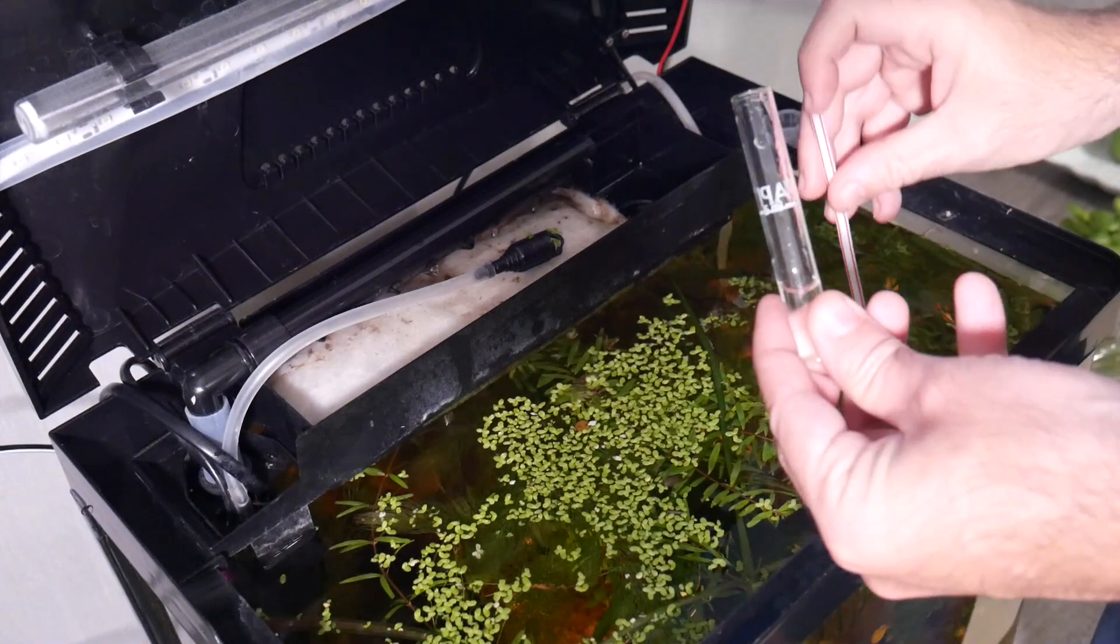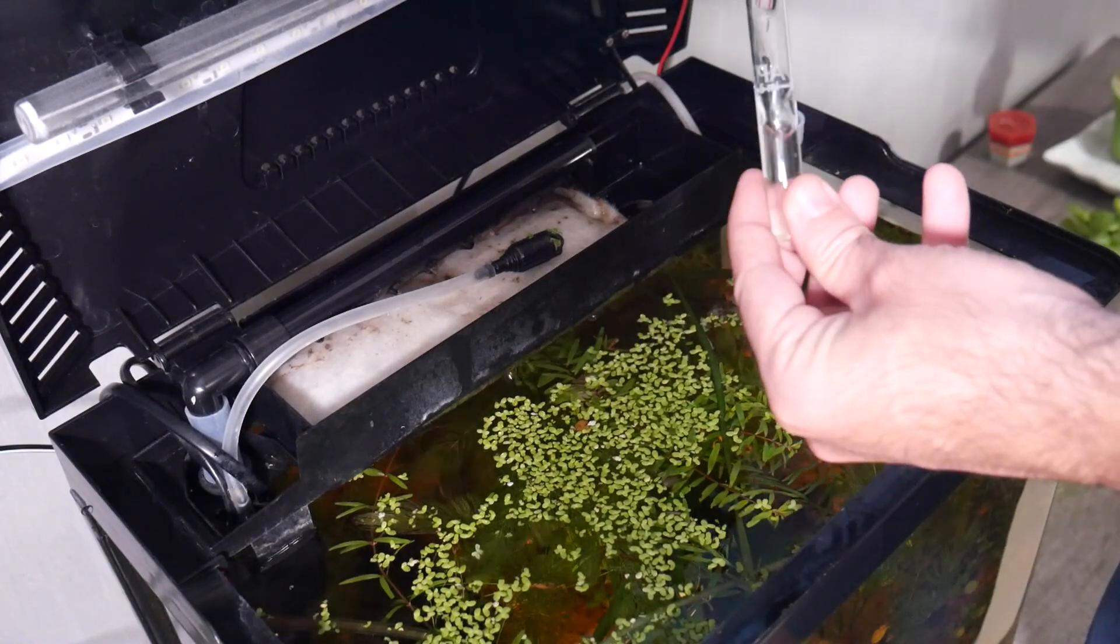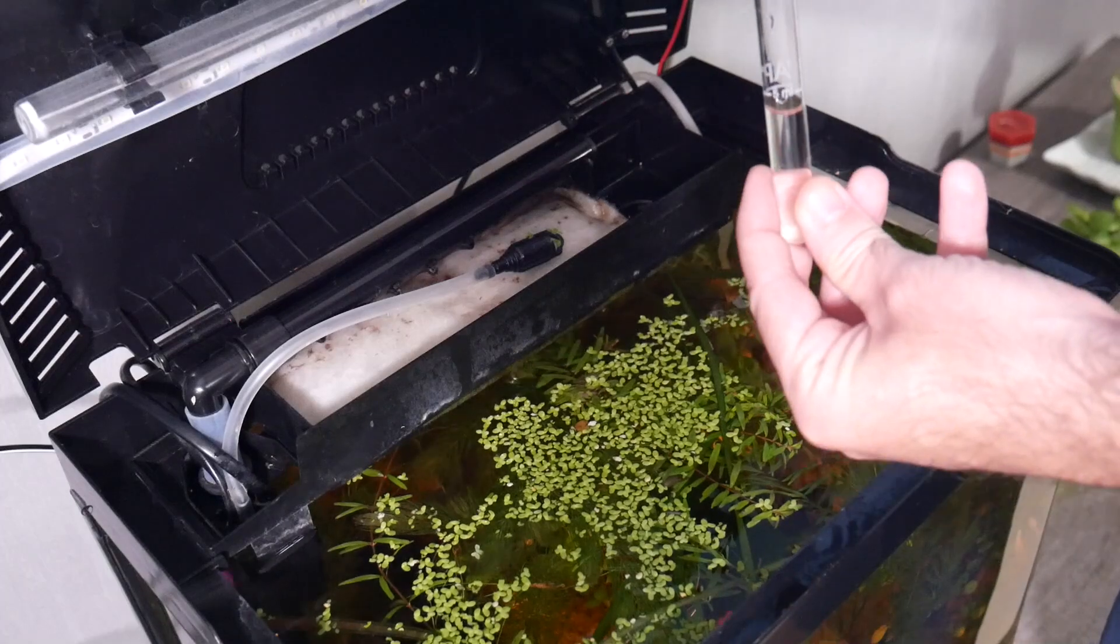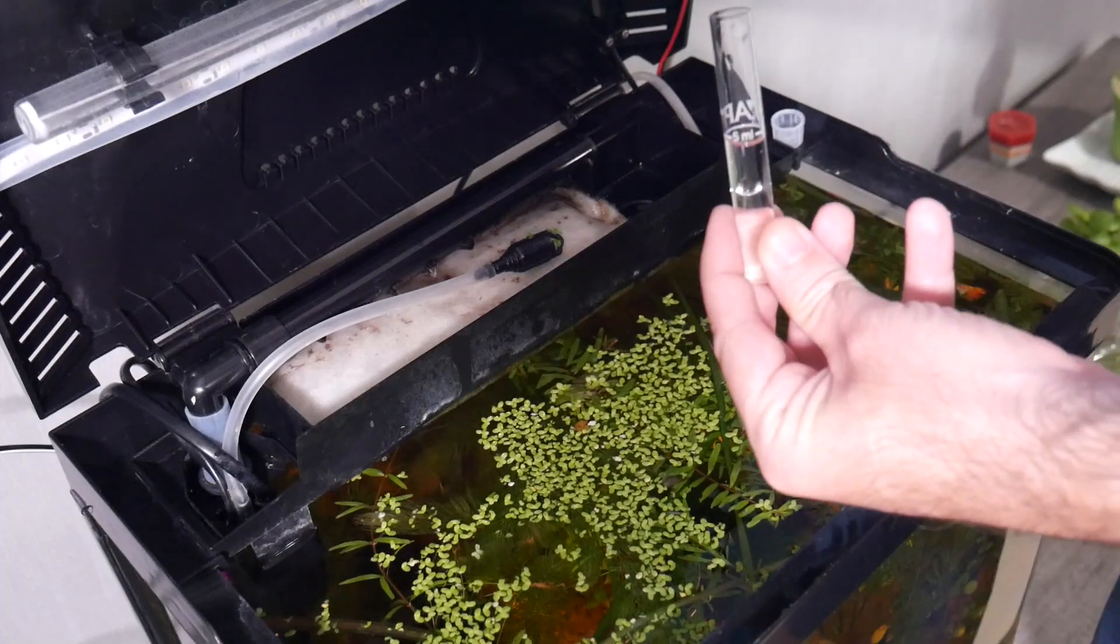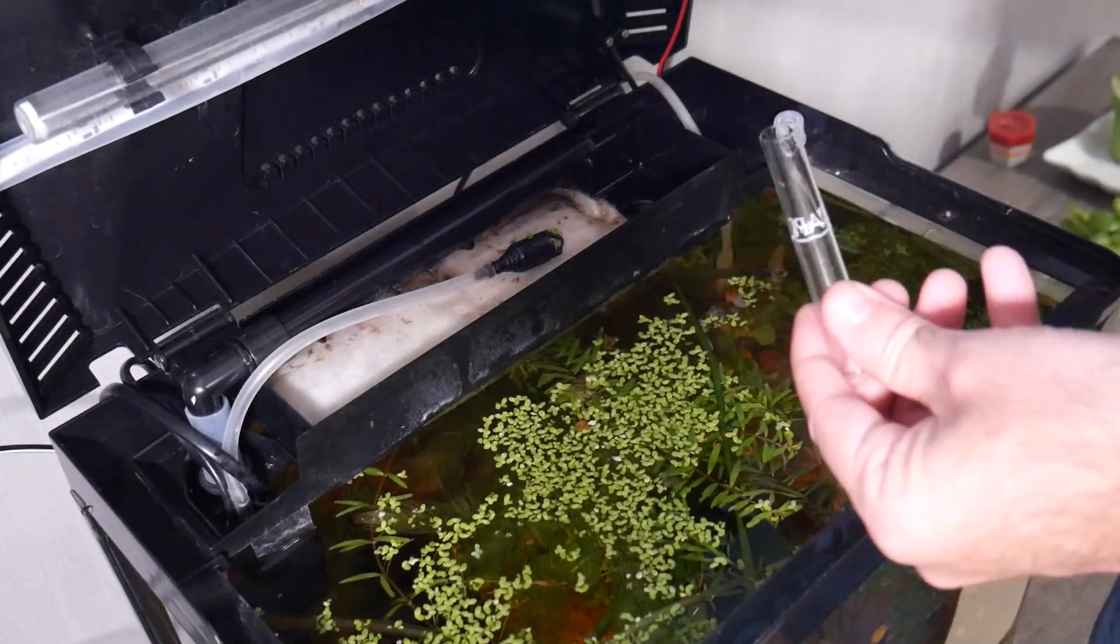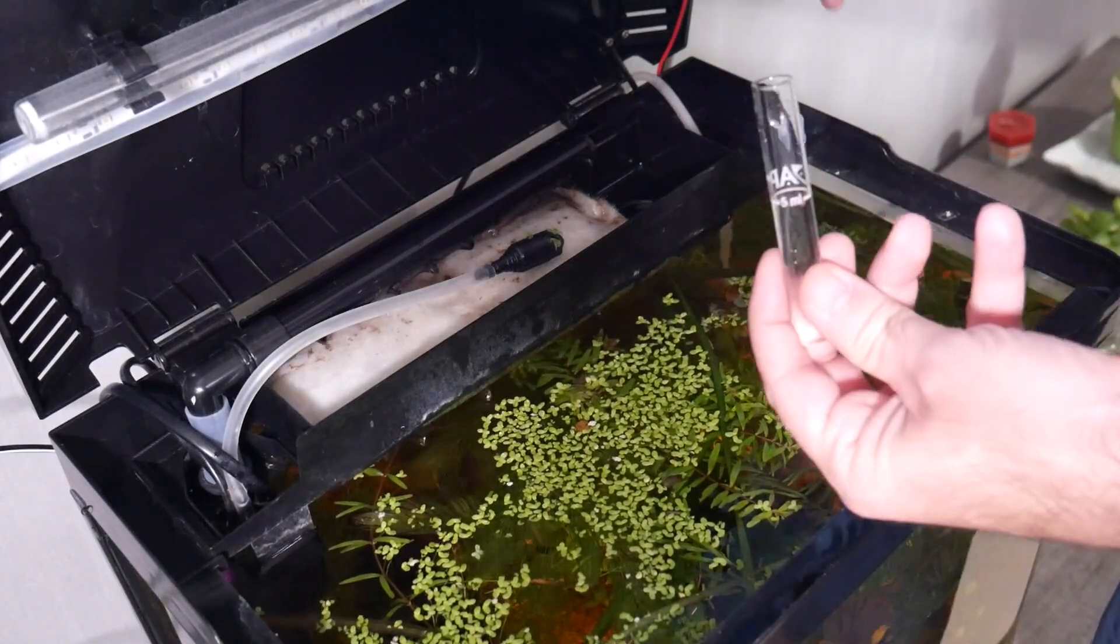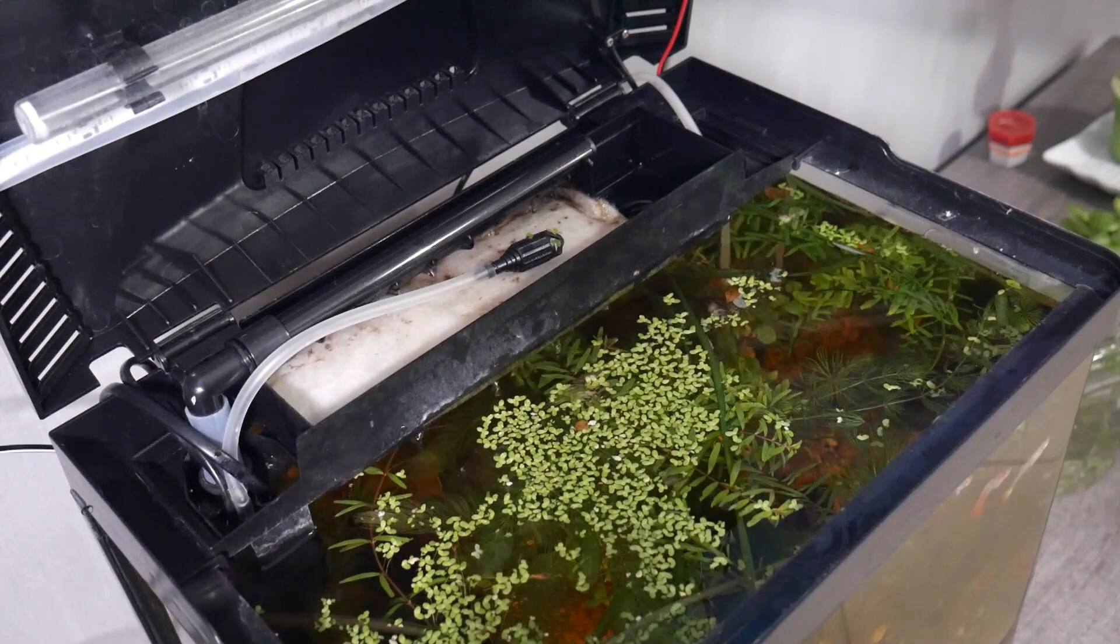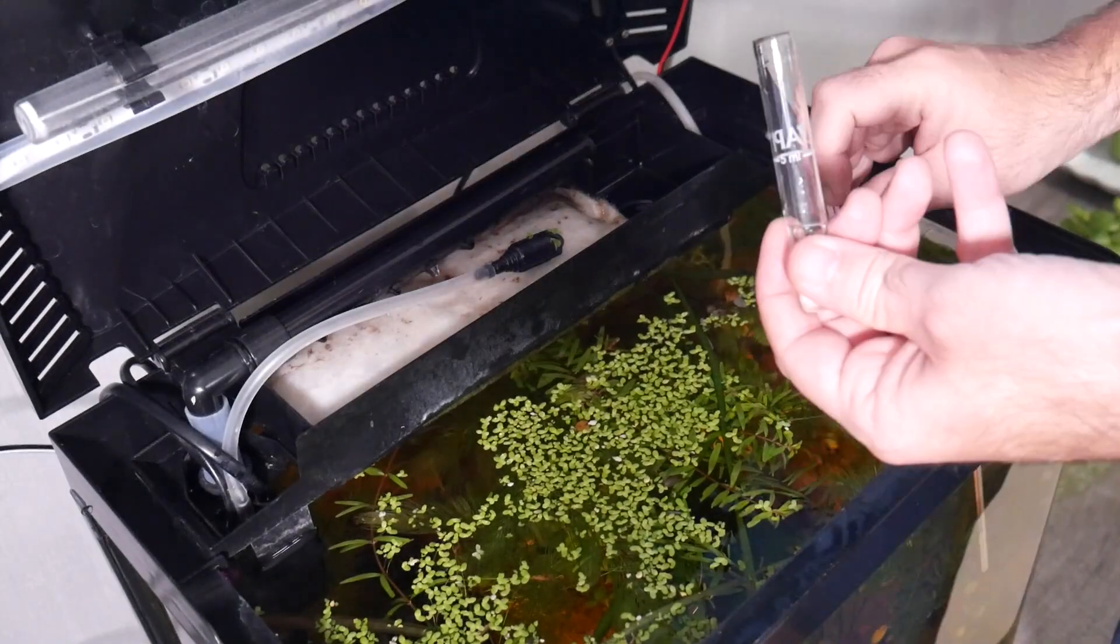We need to fill the four tubes with aquarium water. To do that I am using a straw, this is a more precise method instead of dipping the tube in the aquarium. If you have a syringe, you can use it also. After we fill all the tubes, we can continue with the test.